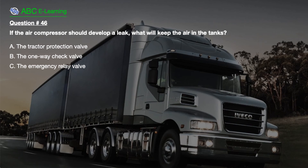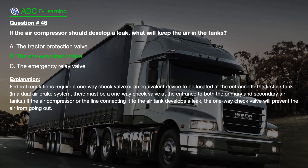Question number 46. If the air compressor should develop a leak, what will keep the air in the tanks? A. The tractor protection valve. B. The one-way check valve. C. The emergency relay valve. The correct answer is B. The one-way check valve. Explanation: Federal regulations require a one-way check valve or an equivalent device to be located at the entrance to the first air tank. In a dual air brake system, there must be a one-way check valve at the entrance to both the primary and secondary air tanks. If the air compressor or the line connecting it to the air tank develops a leak, the one-way check valve will prevent the air from going out.